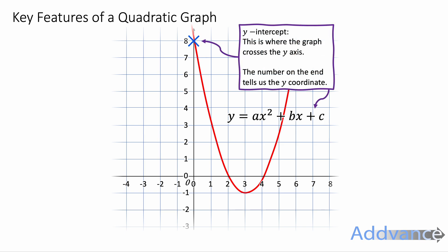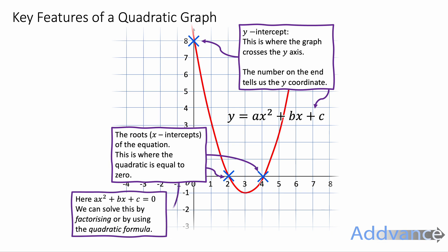The y-intercept of a quadratic equation is given by the number added on the end of the quadratic. So here it's plus c, which is plus 8, because this quadratic crosses the y-axis at 8. The roots of the quadratic are the x-intercepts — the name for x-intercepts is specifically roots.